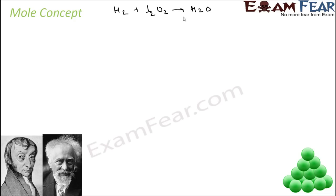Now, to validate this reaction in the lab, we have to weigh hydrogen, we have to find the weight of oxygen, and we have to find the weight of water. What do you think is the minimum amount you can weigh in the lab without using very high-end instruments? It has to be in grams, right? You can measure one gram, two grams, or even milligrams. But let's say grams is a standard value.